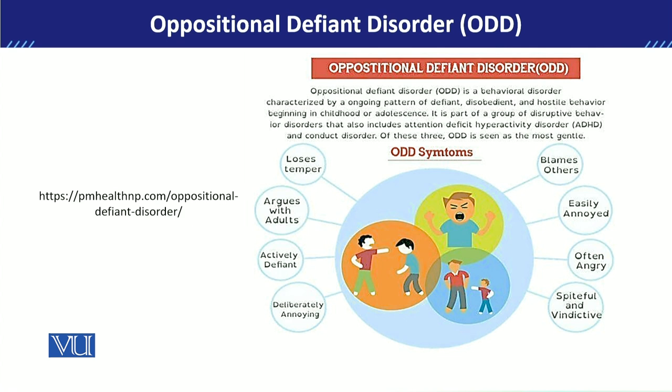ODD वाले बच्चे ऐसे behavior exhibit करते हैं जो destructive होते हैं। आम तौर पर यह disorder exhibit हो जाता है before the age of 8 years। बचपन में ही बच्चे का temperament थोड़ा hostile होगा, temper tantrum बहुत ज़्यादा exhibit करेगा, और argumentative बहुत ज़्यादा होगा।